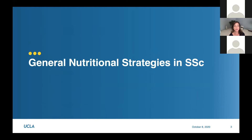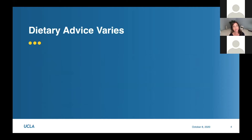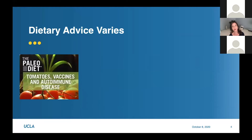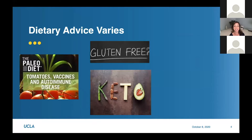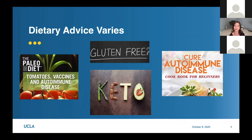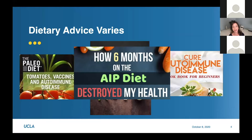When I think about nutritional strategies and systemic sclerosis, if you do a Google search and put in autoimmune disease and diets, you're going to get a whole lot of recommendations, and this can be overwhelming. People may tell you to do the paleo diet, someone else may say you need to be gluten-free, then someone may ask why aren't you ketogenic, and here's a book that can cure your autoimmune disease. You may even see advice saying the autoimmune protocol diet destroyed someone's health.